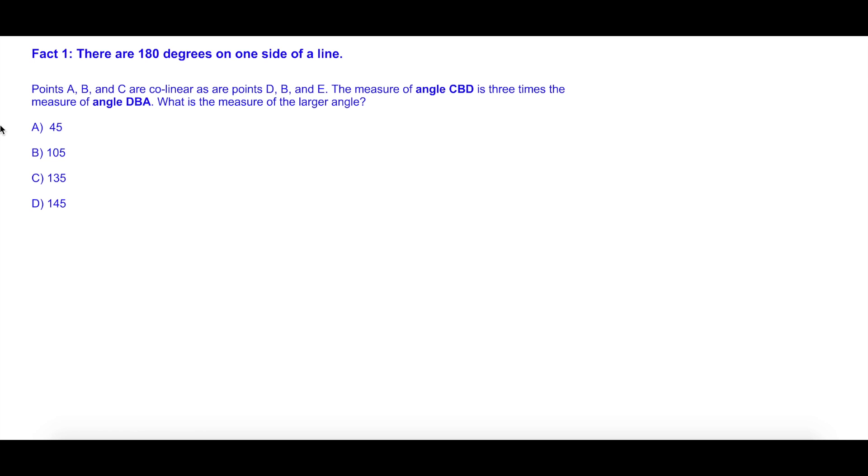So the first problem up - this is testing you on fact number one, that there are 180 degrees on one side of a line. Points A, B, and C are collinear, as are points D, B, and E. Before we go anywhere, I want to make sure you understand what collinear is. That means sharing a line or lying on the same line. So if you were to draw this figure, you would have A, B, and C, and D, B, and E would run through that line.